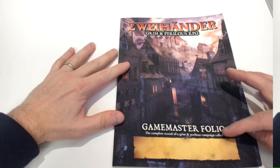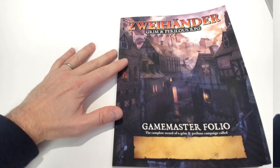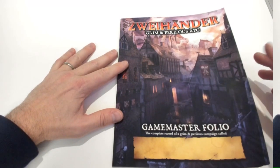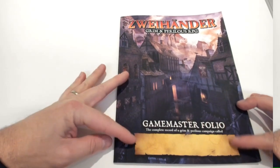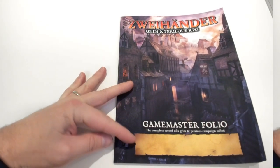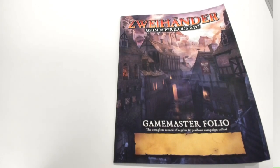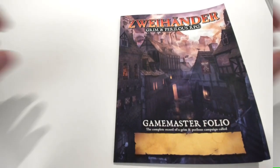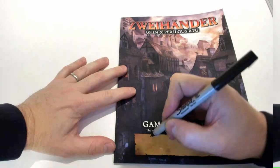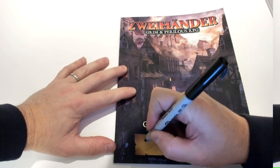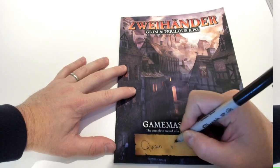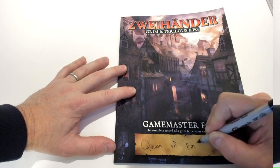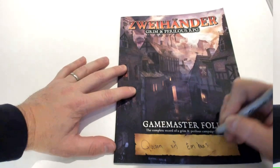You can see on the very front here it says Game Master Folio, the complete record of a Grim and Perilous campaign. You'll notice it's blank - this is actually free to write your campaign name. Because I'm currently running Queen of Embers, I'm gonna write Queen of Embers in with a permanent marker. Forgive my terrible handwriting, I'm writing kind of upside down here.